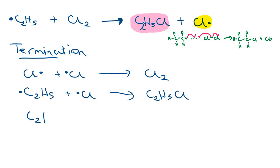Lastly, you could actually have two ethyl radicals coming together. An ethyl radical reacting with another ethyl radical. And what happens here is when these two radicals combine, you get C4H10, which is butane.